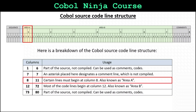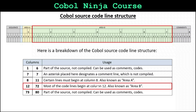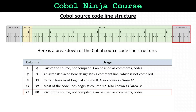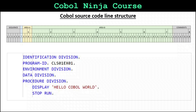Certain code lines must begin at column 8 — for example, divisions. Columns 12 through 72 is where the rest of the code lines will begin; this is also known as area B. Columns 73 through 80 are, like columns 1 through 6, part of the source but not compiled. They can be used as abbreviated comments or codes.